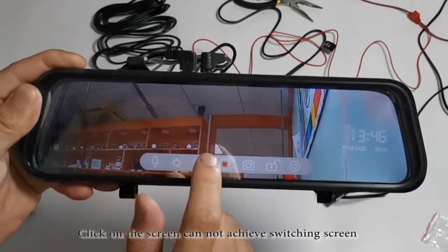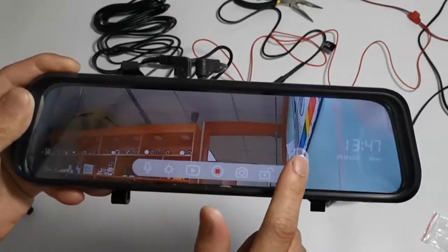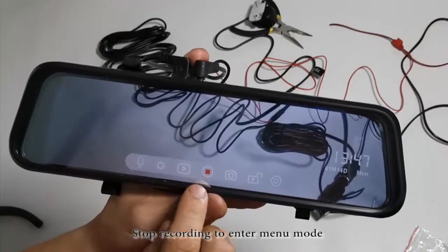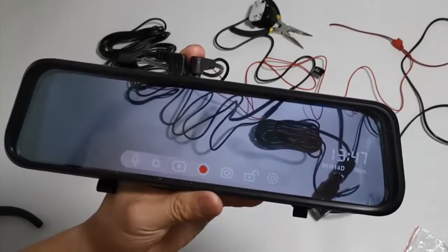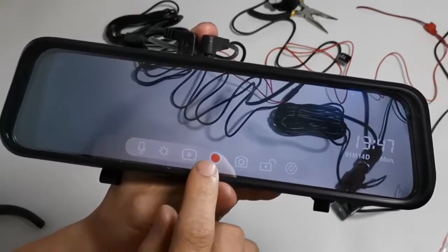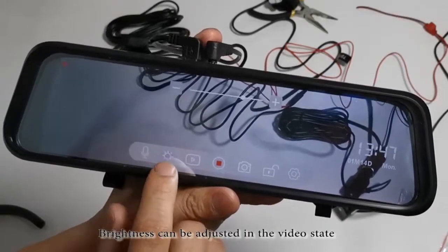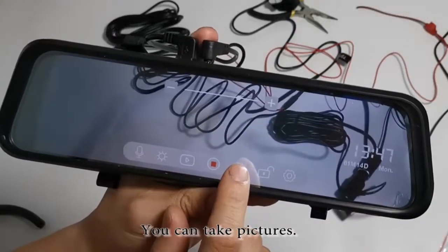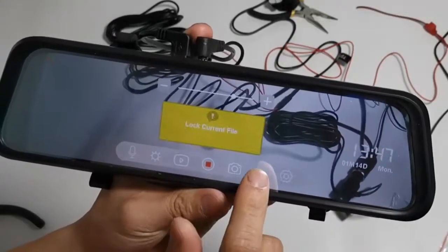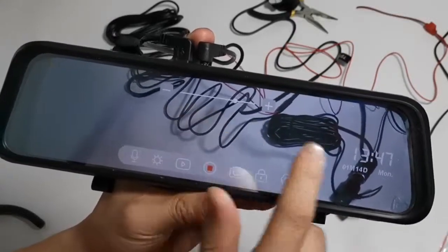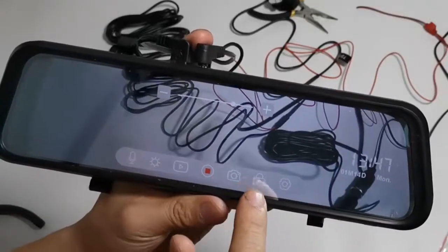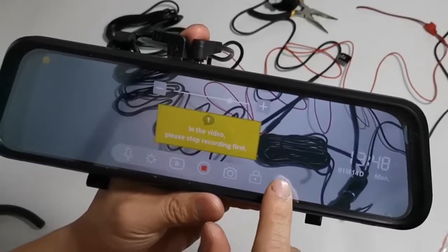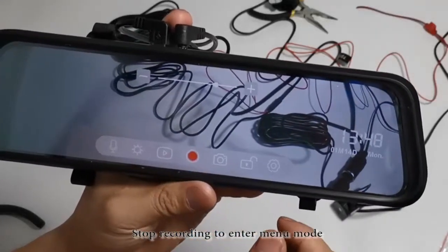Click on the screen cannot achieve switching screen. Stop recording to enter menu mode. Brightness can be adjusted in the video state. You can take pictures. Stop recording to enter menu mode.